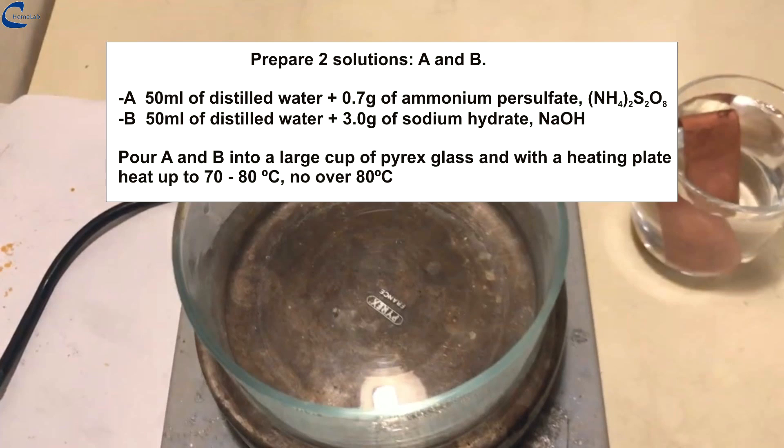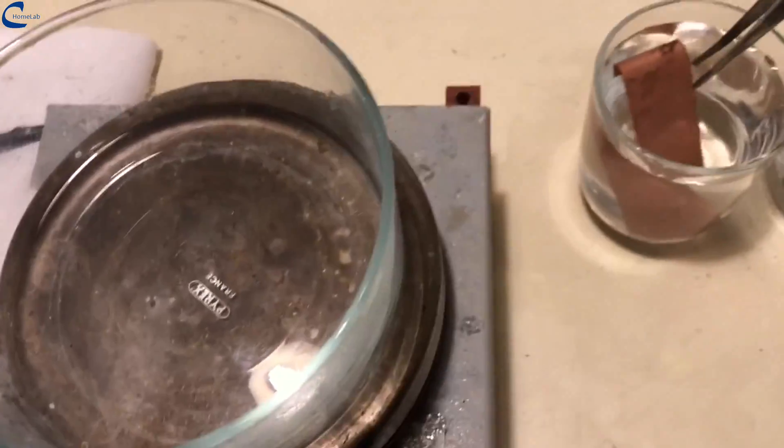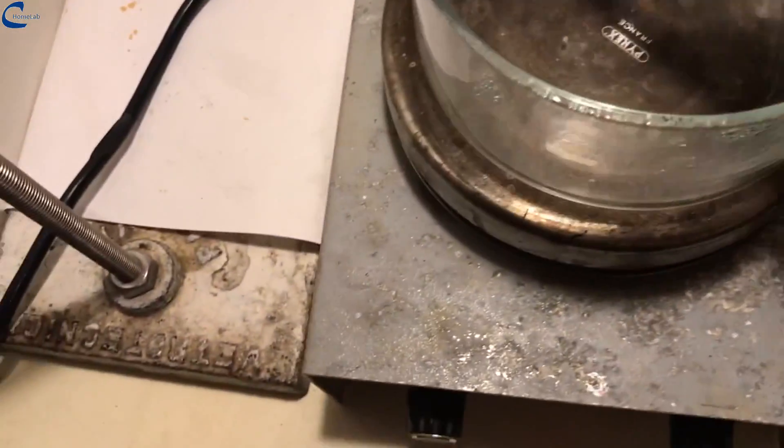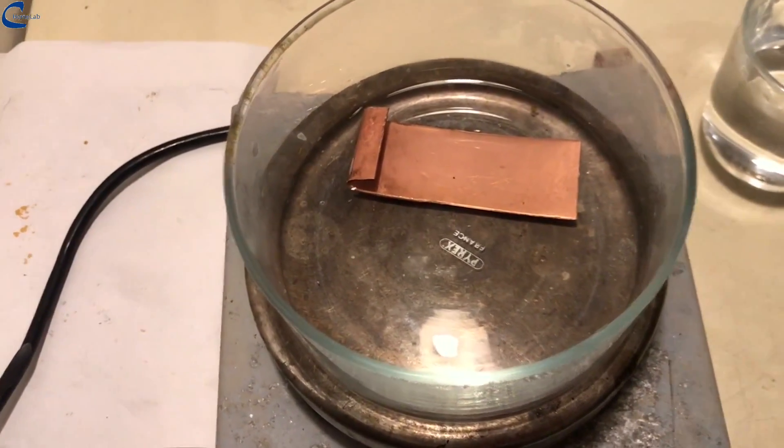The two solutions should be poured into a large cup of pyrex glass placed on top of the heating plate. The solution should be brought to a temperature between 70 and 80 degrees centigrade, better not to exceed 80 degrees. The copper electrode that after cleaning with nitric acid had remained immersed in distilled water is immersed in the cup to undergo the oxidation process.